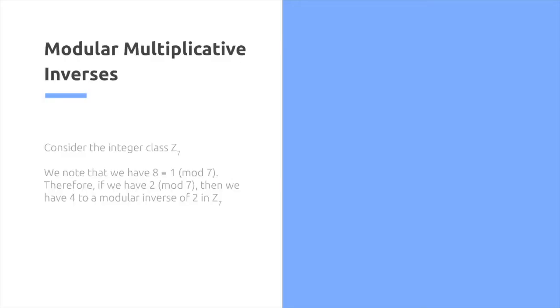Modular multiplicative inverses. We consider the integer class z of 7. We know that if we have 8, is congruent to 1 mod 7. Therefore, if we have 2 mod 7, then we have 4 to a modular inverse of 2 in z of 7.